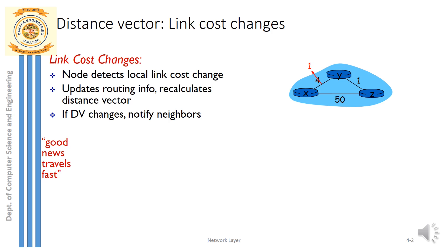As the saying goes, good news travels fast. The cost is reduced — that is good news. The cost to reach from y to x has become 1, and the cost to reach from z to x, with z to x as the destination, should be 1 plus 1 equal to 2. But we have to check whether this new cost will be reflected and circulated to node z.